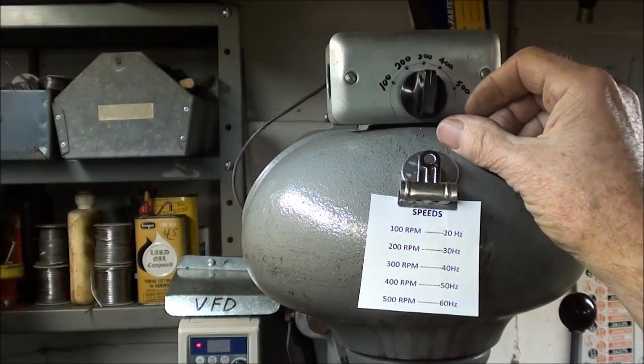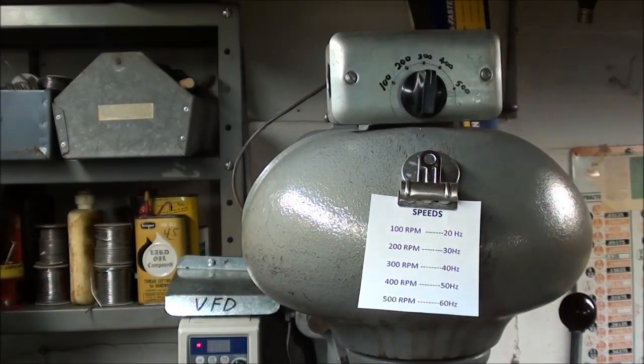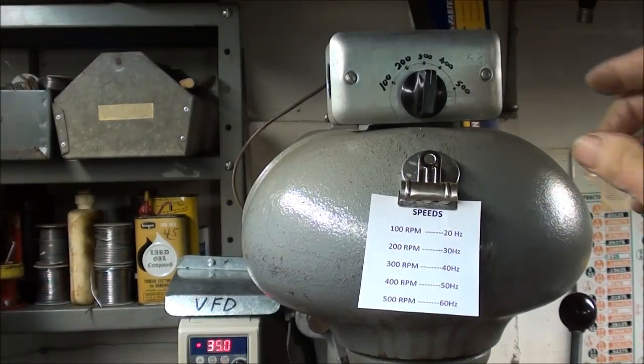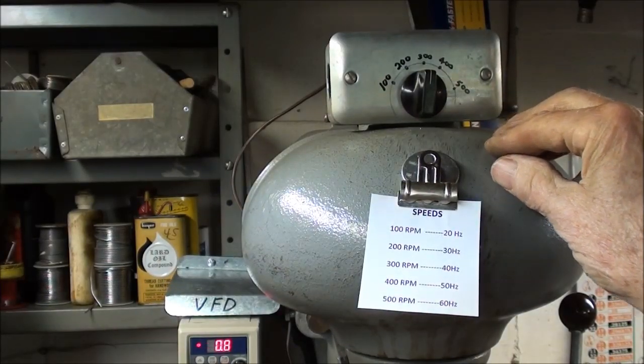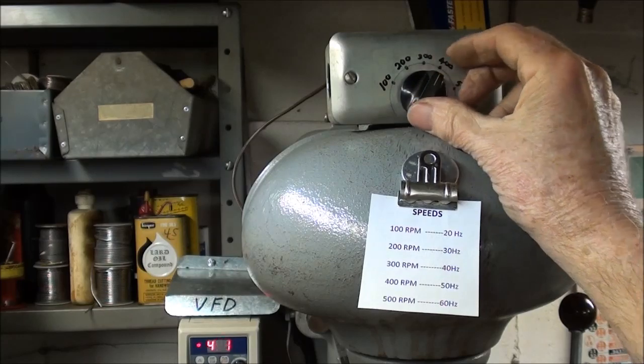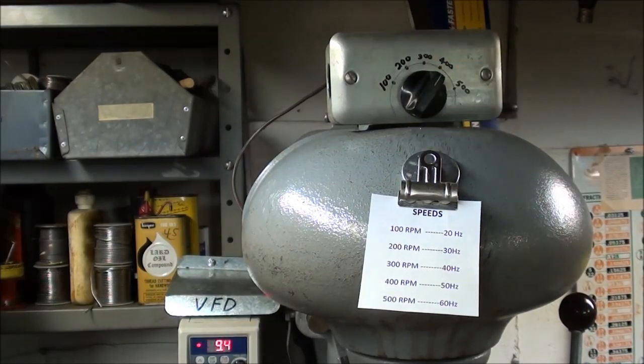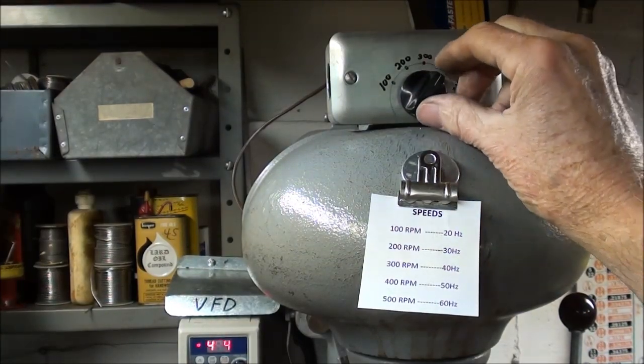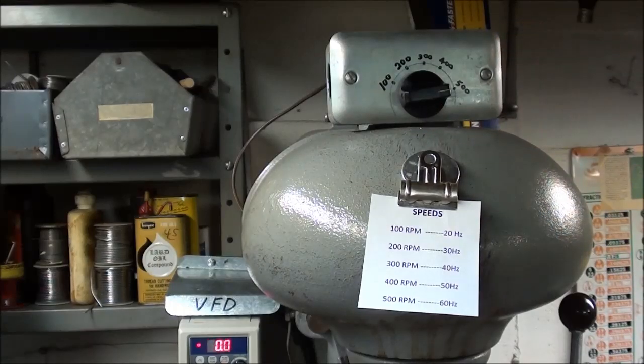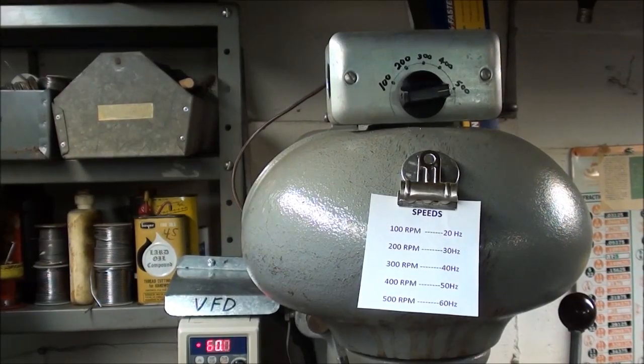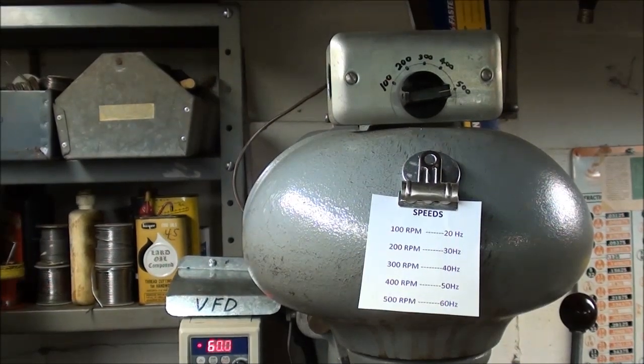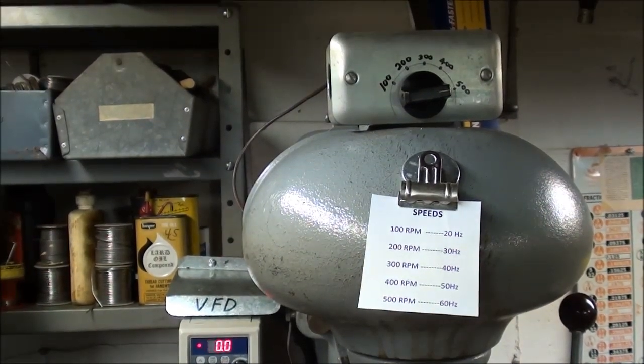This is 300 RPM, approximately. Let me turn it on. That's 300. That's 400 RPM. And finally, top speed of 60 cycles, 60 Hertz, is 500 RPM.